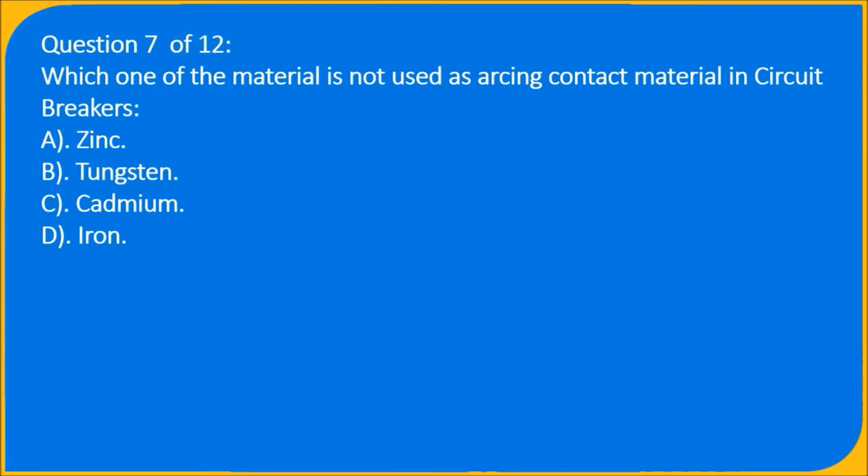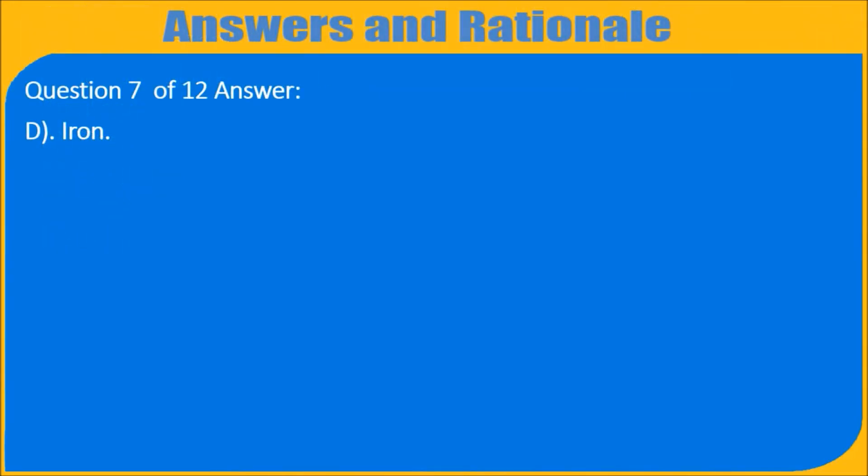Question 7 of 12: Which one of the material is not used as arcing contact material in circuit breakers? A) Zinc, B) Tungsten, C) Cadmium, D) Iron. Question 7 of 12 answer: D) Iron.